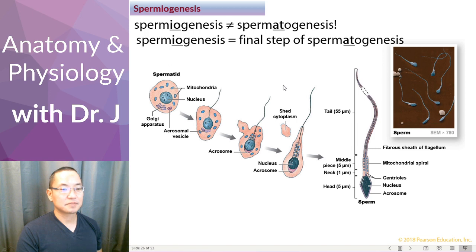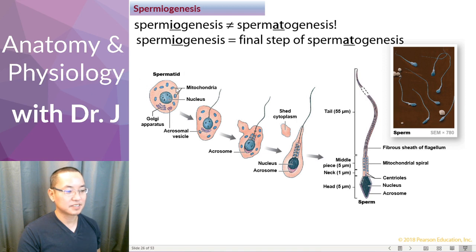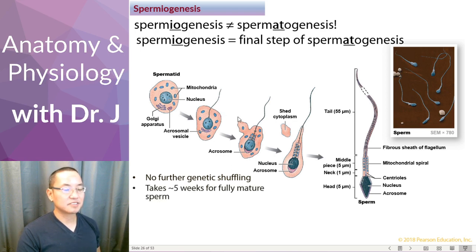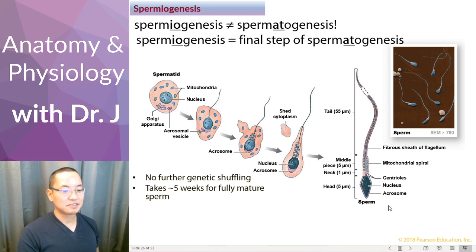This is the final step of spermatogenesis. This is an immature spermatid — it does have half the number of chromosomes and the final genetic material, but now it needs to grow this final structure, this tail right here. There are no further genetic changes, no crossovers, no division. And it takes about five weeks. Even though it's the last step, it's not a simple five-minute step — it actually takes five weeks to develop from a spermatid to a sperm.